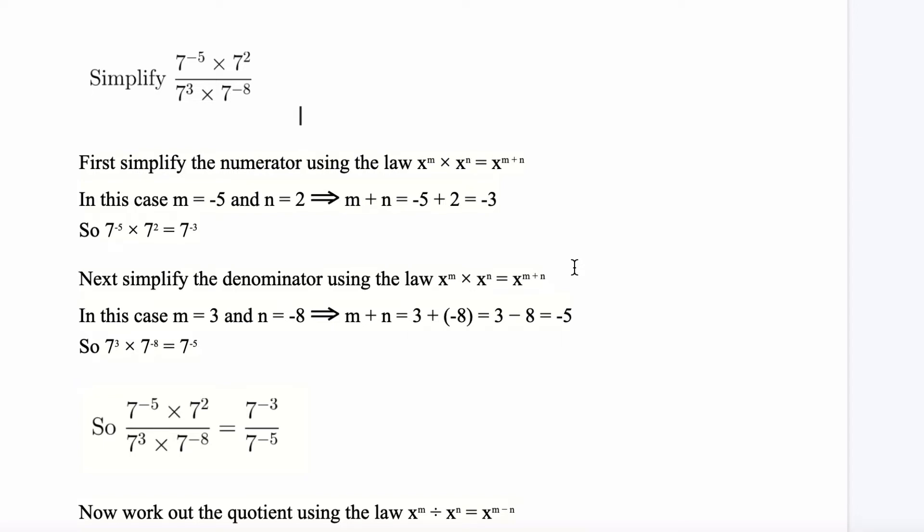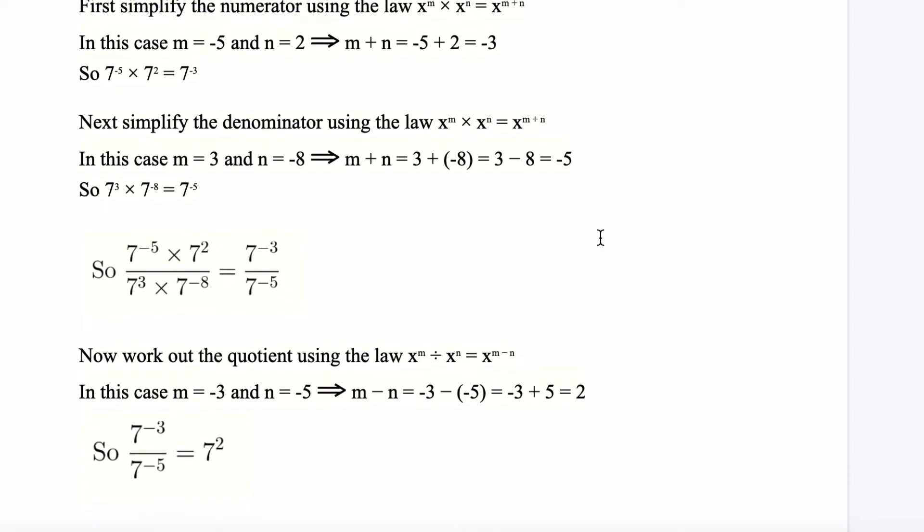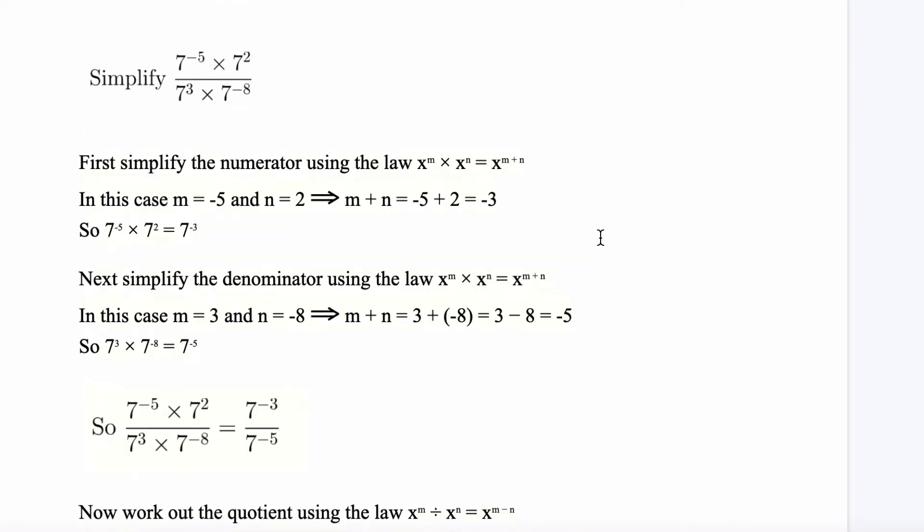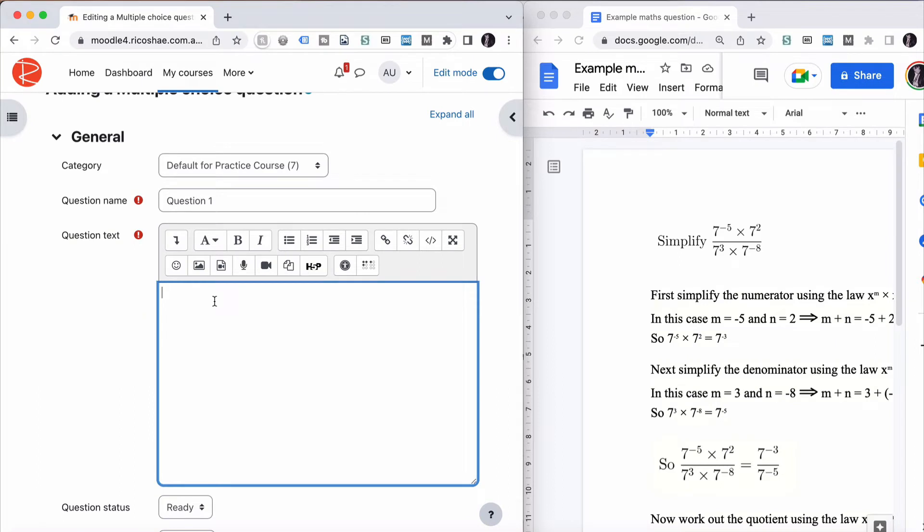Over 7 cubed times 7 to the minus 8. Yeah, okay. I'm trying to remember back to high school maths when we had to work this out. But what I'm going to show you is how we can put this equation into Moodle so that you can use these type of questions in your quizzes. And then how we can put that in the answers as well. We'll just go step by step through and I'll see where we end up. In our question text, we simply have to put in, simplify the following equation.